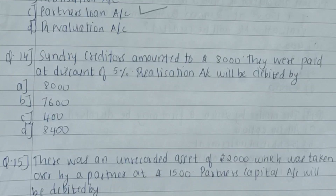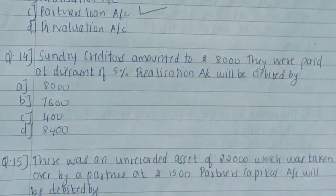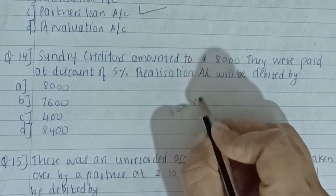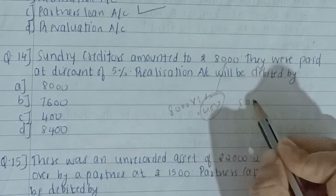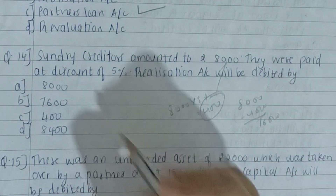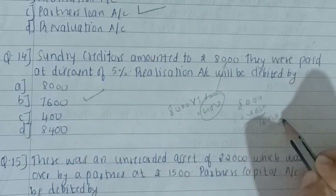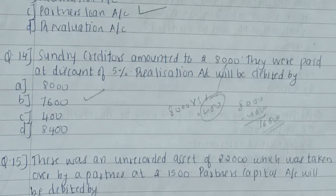Fourteenth question: sundry creditors amounting to Rs. 8,000 were paid at a discount of 5%. By which amount will the realization account be debited? Calculating 5% of 8,000 gives 400 rupees. Deducting 400 from 8,000 gives 7,600. Therefore the answer is B — Rs. 7,600. Whenever a discount is given, it is deducted from the total amount payable, so the actual payment is always less than the original creditor balance.